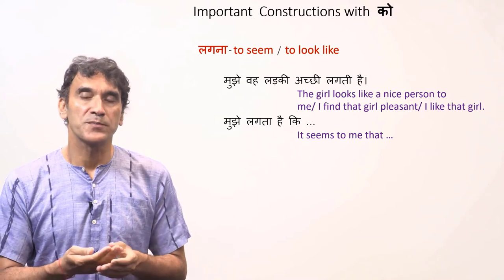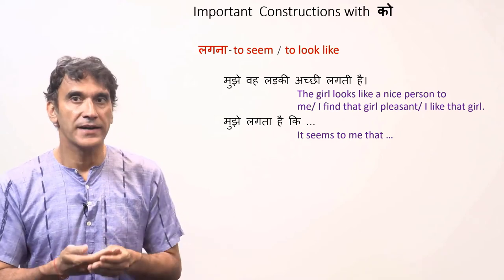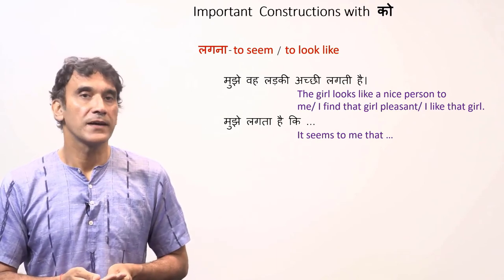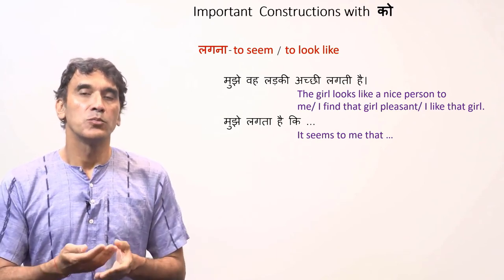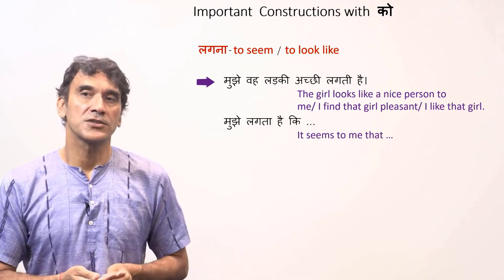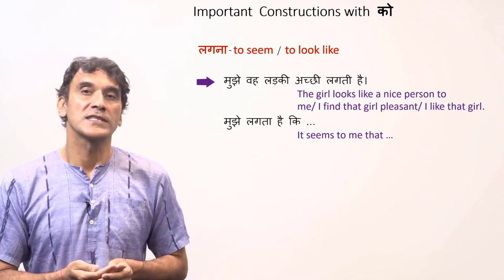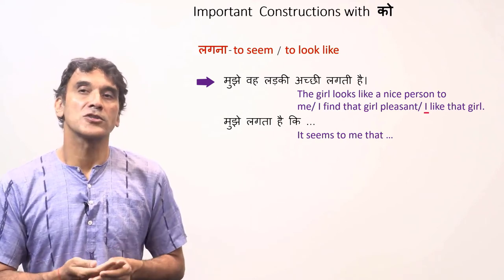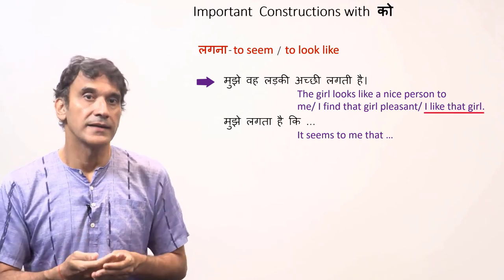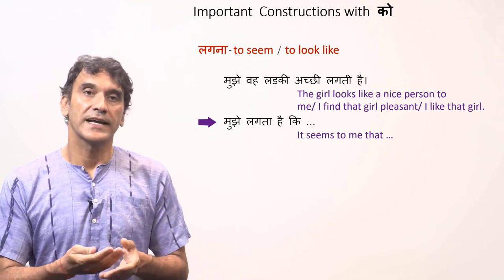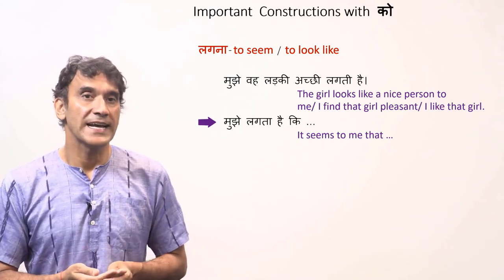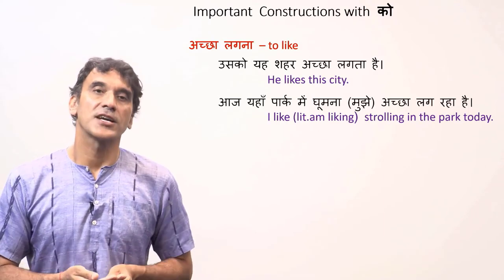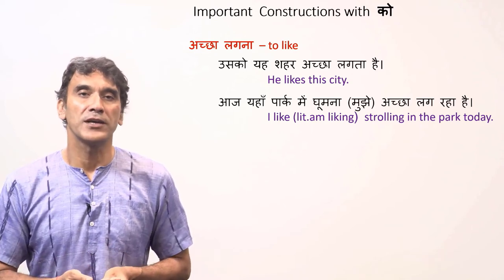A common verb that has the postposition ko with the subject is lagna. Lagna means to seem, to look like. Mujhe wo ladki achhi lagti hai — the literal translation is 'The girl looks like a nice person to me,' or 'I find that girl pleasant,' but the most common translation would be 'I like that girl.' Next example: Mujhe lagta hai ki — it seems to me that. This is a common phrase you would hear a lot.